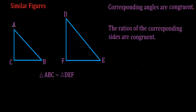This triangle is labeled ABC. Notice that these letters are labeling the vertices of the triangle. So I have a vertex here labeled A, a vertex here B, and a vertex here C. Same thing with this triangle — we label the vertices. This vertex is D, E, and F.